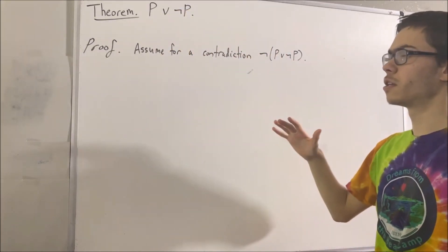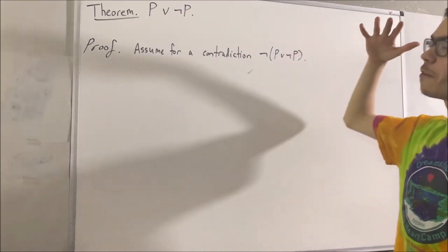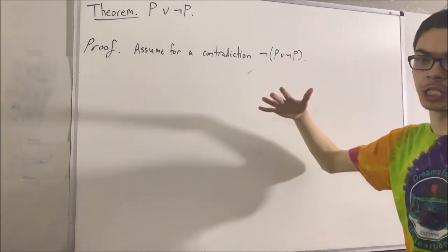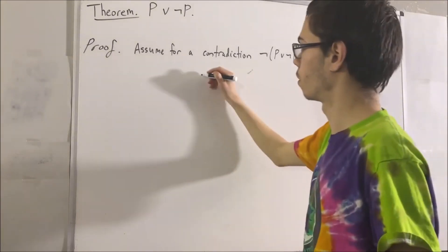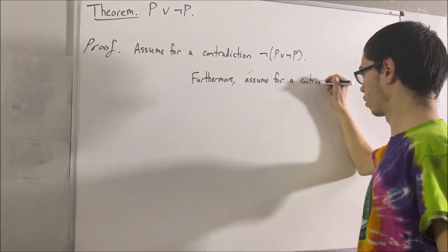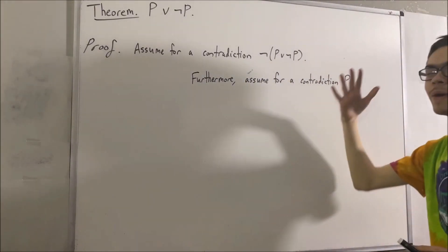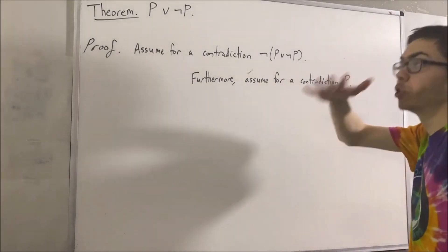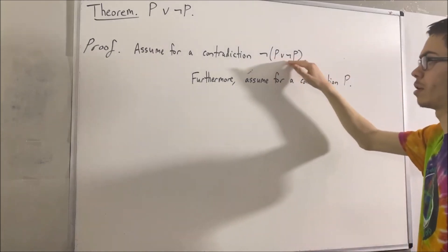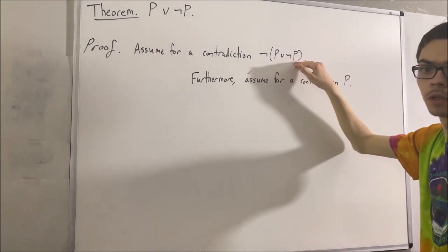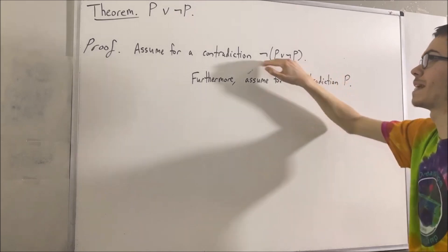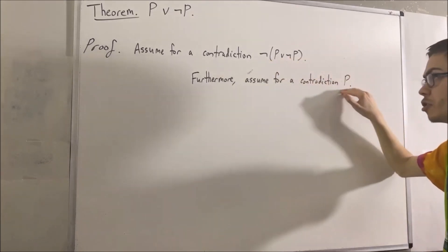Okay, so to do that, let's further assume for a contradiction that P is true. So you can imagine we are working within a universe where not (P or not P) is true, and we're going to assume that in this universe, we have that P is true.